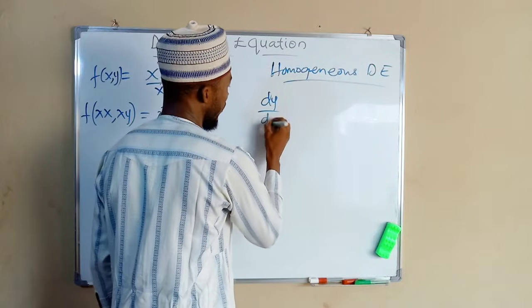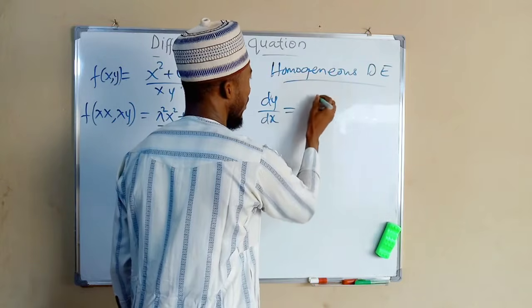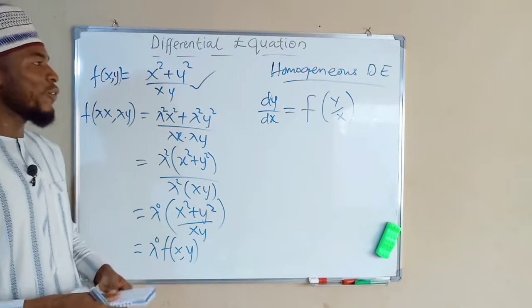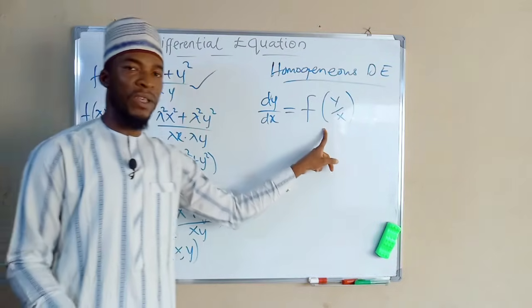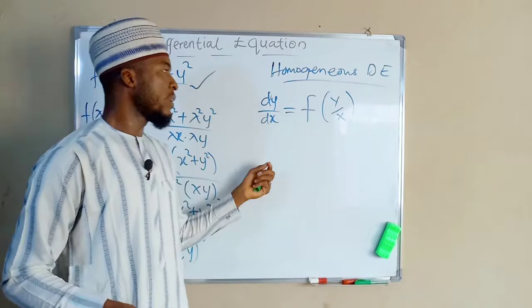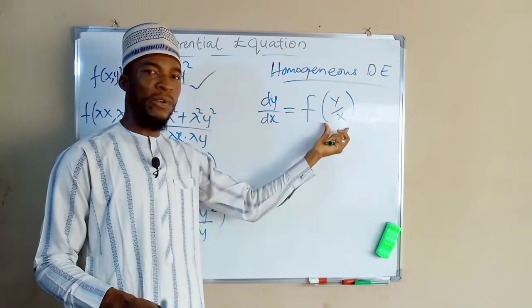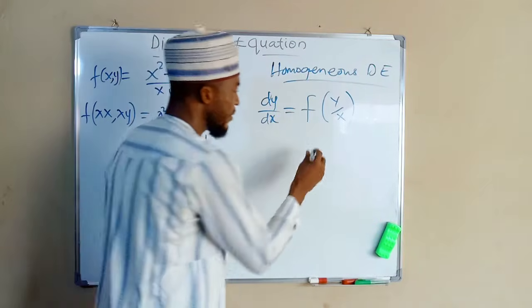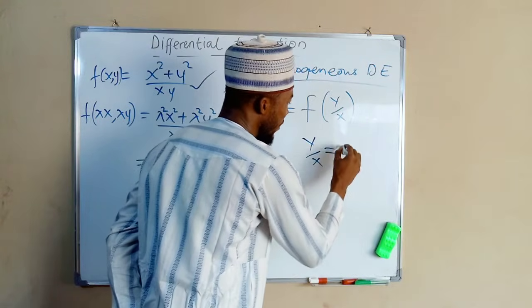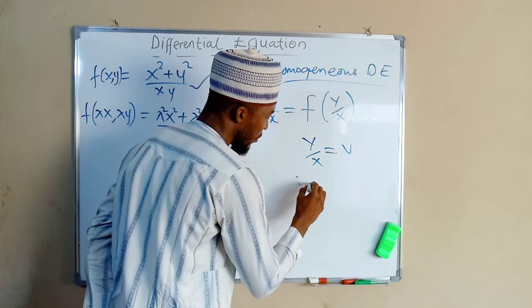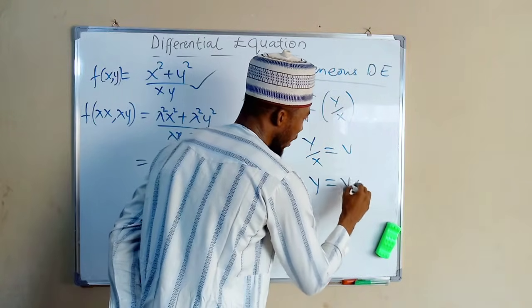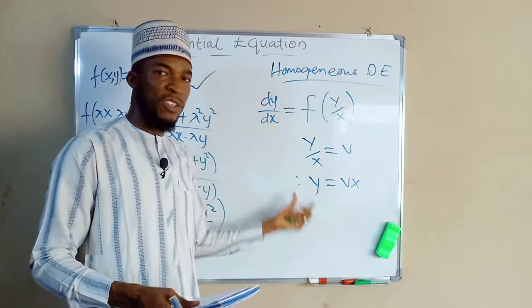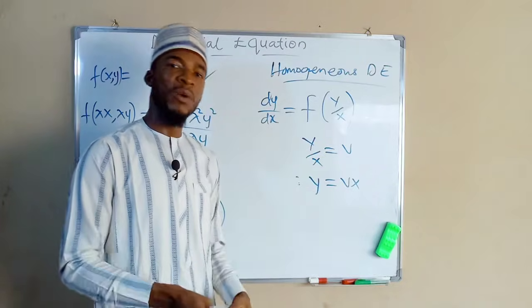Another way to identify a homogeneous differential equation is if the derivative can be written as a function of y over x. If you can transform the equation into a function of y over x, it is homogeneous. The purpose of this is that if the equation is not separable, we can substitute y over x equal to v, making y equal to vx, then differentiate y with respect to x to transform it into a separable equation.